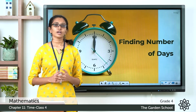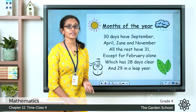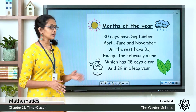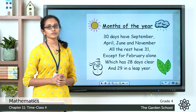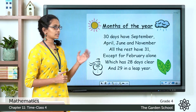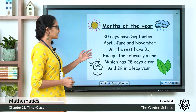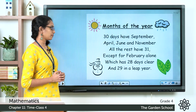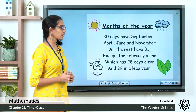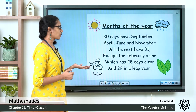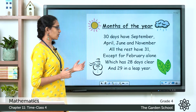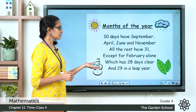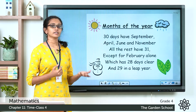It will be easy for you to find out the number of days in each month if you can memorize this small rhyme: 30 days have September, April, June and November. All the rest have 31, except for February alone which has 28 days clear and 29 in leap year.